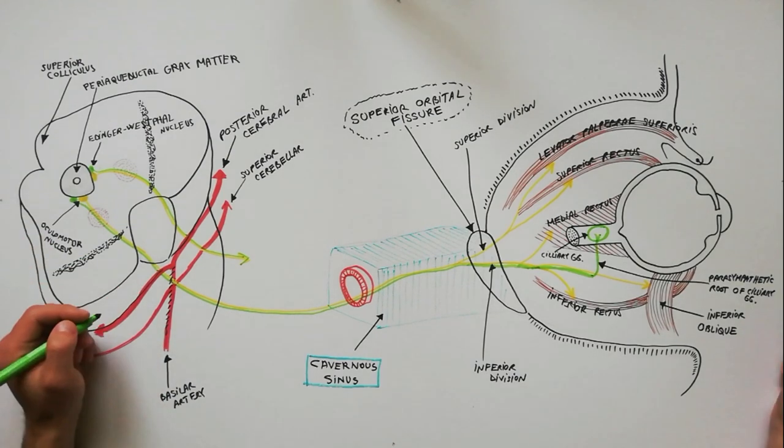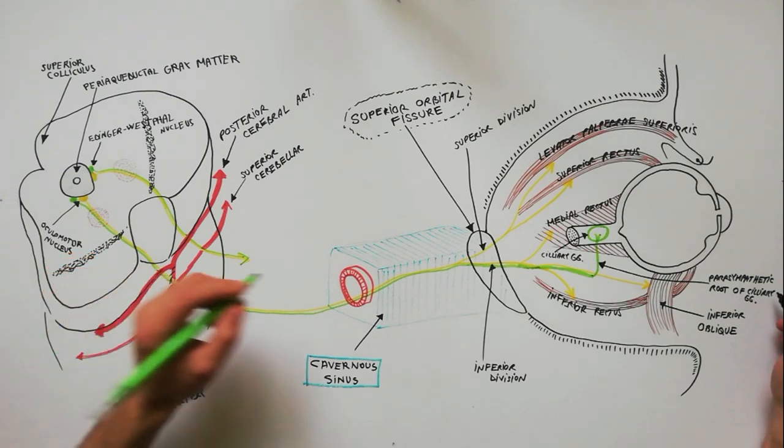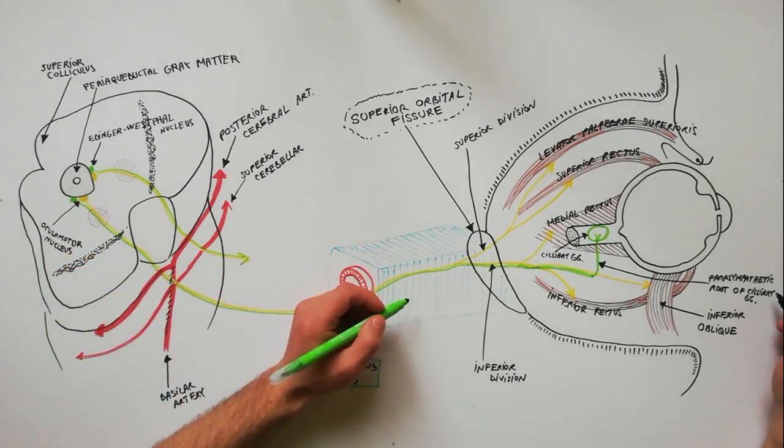The ciliary ganglion is located behind the eye and lateral to the optic nerve, and contains parasympathetic postganglionic neurons.